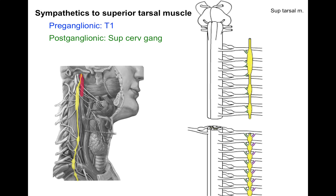How do you get sympathetics up there? On your left is a sympathetic chain shown in yellow, and red is the internal carotid artery. On the right we see the spinal cord — there's the lateral horn of T1, and preganglionic sympathetics ascend up the chain and synapse in the superior cervical ganglion. A postganglionic sympathetic will hug the internal carotid artery and follow the arteries up to the eye and innervate the superior tarsal muscle.